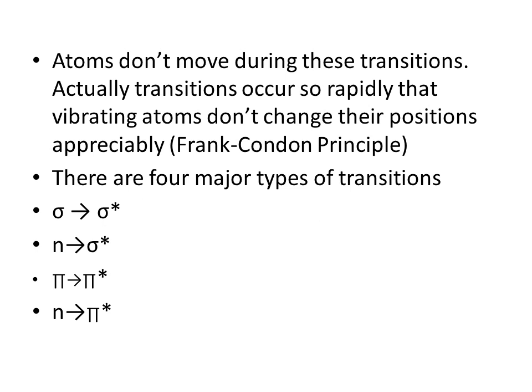One important point: only electrons move from lower to higher energy levels during these transitions — atoms do not move. Electronic transitions occur so rapidly that vibrating atoms do not change their positions appreciably. This is the Franck-Condon principle. There are four major types of transitions observed in UV visible spectroscopy: σ→σ*, n→σ*, π→π*, and n→π*.